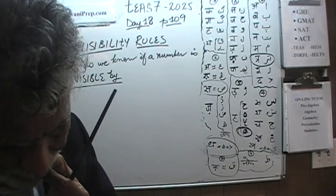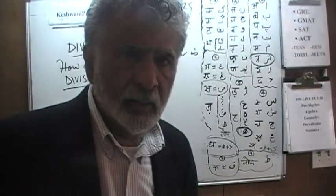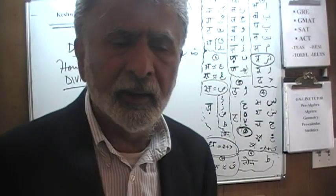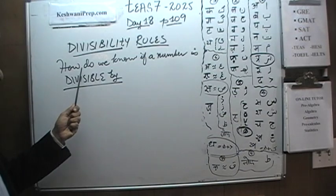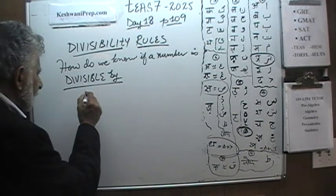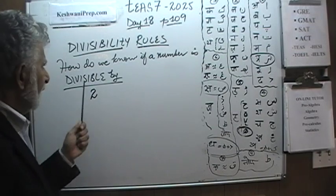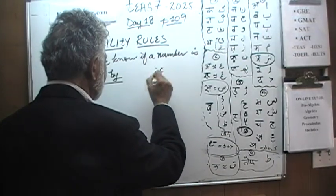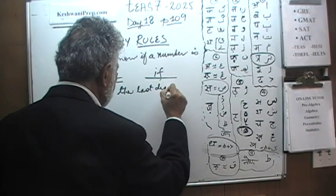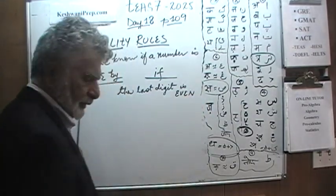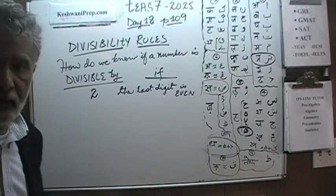The concept we're going to discuss today is what is known as divisibility rules. If a number is given to us, how can we tell just by looking at it — just by looking at it a quick second — whether it's going to go evenly into two, three, four, or five? A number is divisible by two if the last digit is even. Just look at the last digit; as long as it's even, the number is divisible by two.